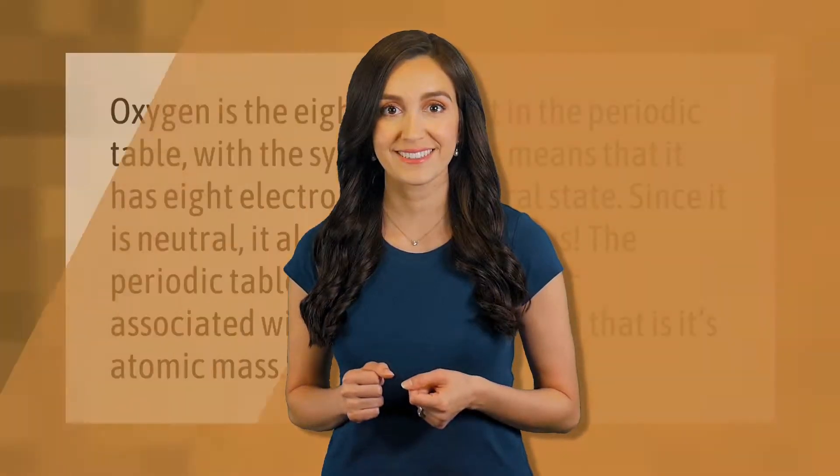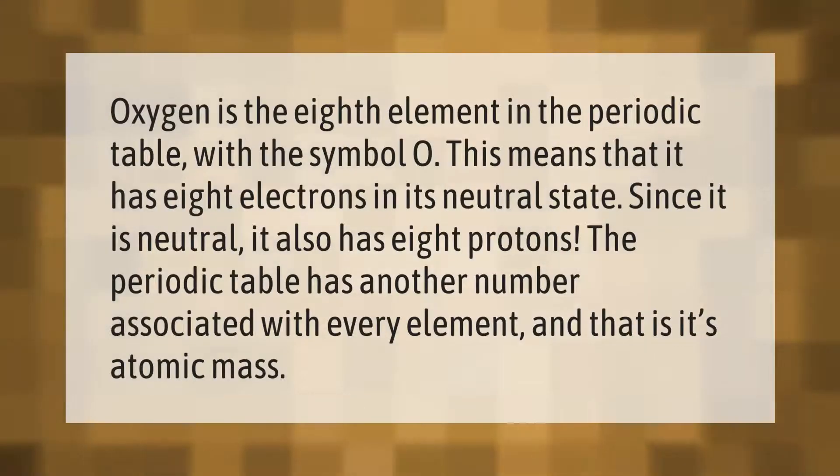Oxygen is the eighth element in the periodic table with the symbol O. This means that it has eight electrons in its neutral state. Since it is neutral, it also has eight protons. The periodic table has another number associated with every element, and that is its atomic mass.